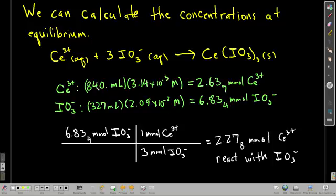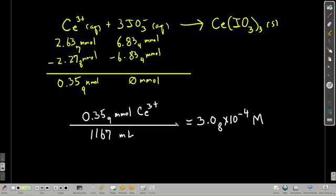At equilibrium, when the reaction is complete, we will have no iodate, but we will have a little bit of cerium 3 left over. If we start with 2.637 millimoles of cerium 3 and we use up 2.278 millimoles, we're going to have 0.36 millimoles of cerium 3 in solution still that didn't combine with iodate. Iodate's going to be all gone. We don't care how much cerium 3 iodate because that's a solid.